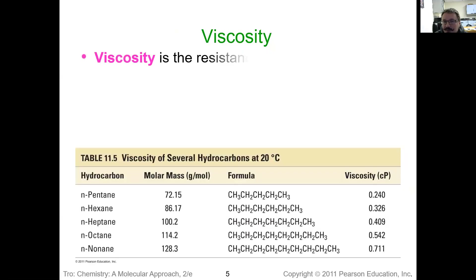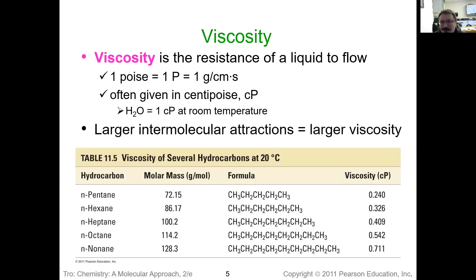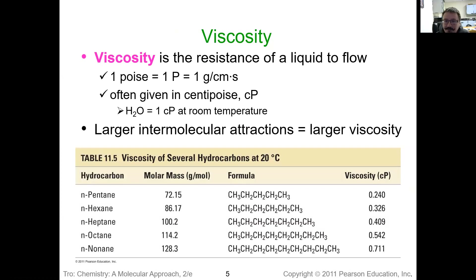Next is viscosity. You've probably heard of viscosity — it's the resistance for something to flow. Things that don't flow very easily include honey, syrup, and motor oil, which are all examples of really viscous substances. Two of them taste really good, one of them doesn't — I'll let you figure out which one that is.